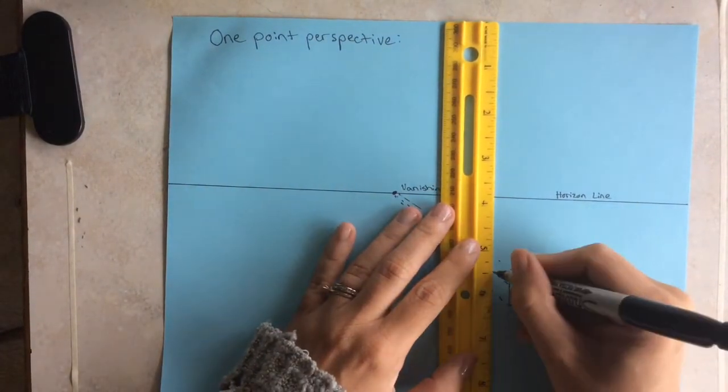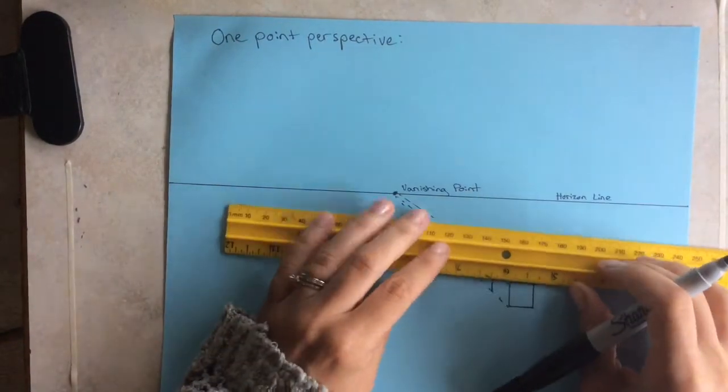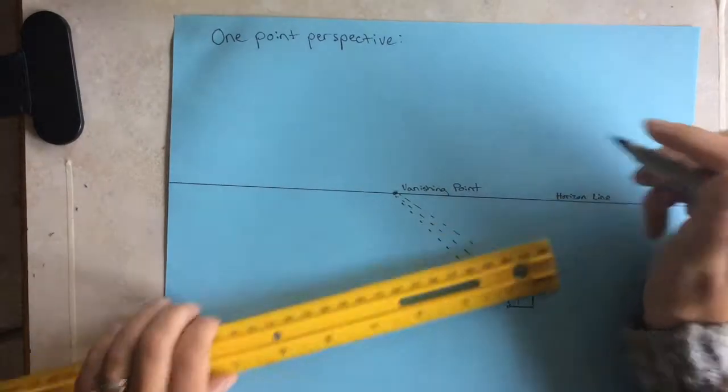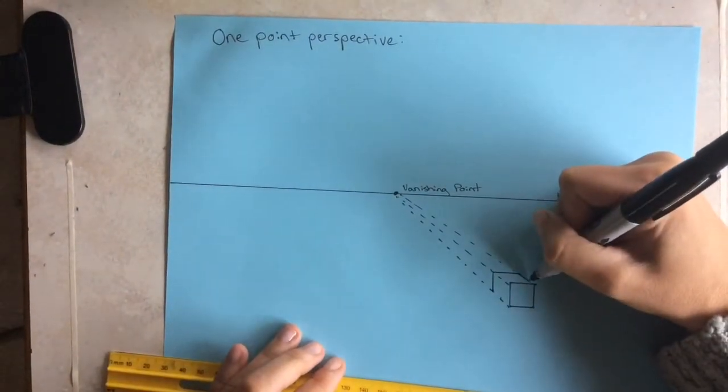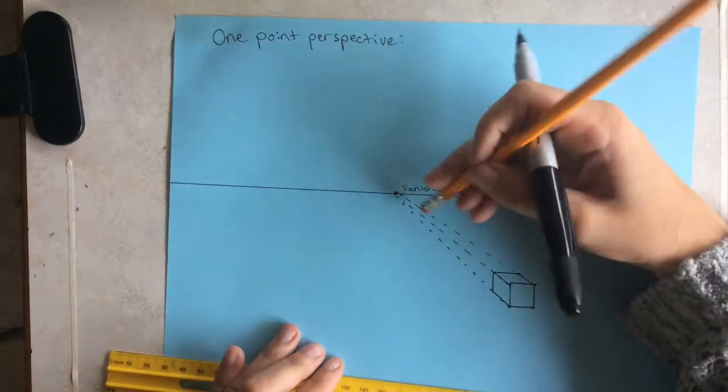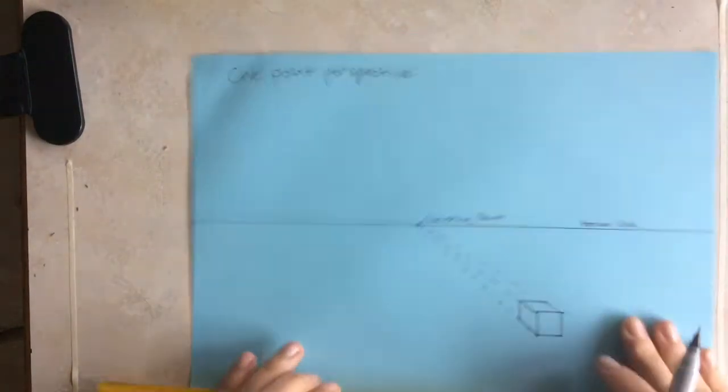Now, you can create a lot of things off of this box. This is just the basics of one point. You can just close up the box. If you weren't using a pen, you could just erase the lines and you wouldn't see them.